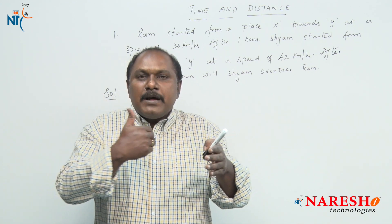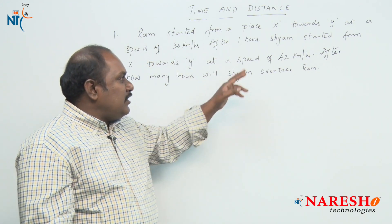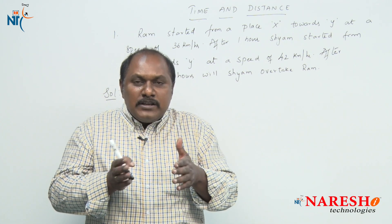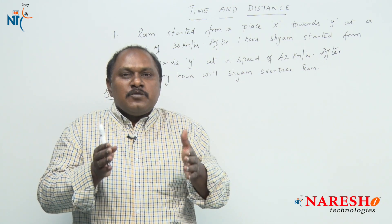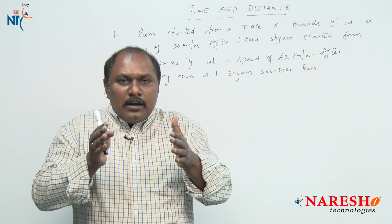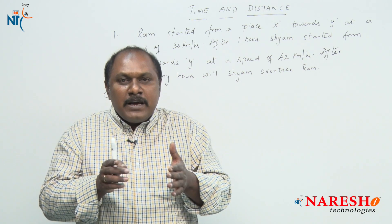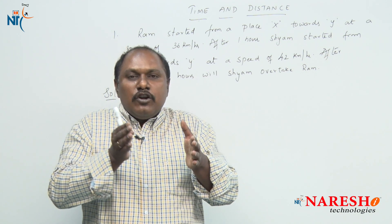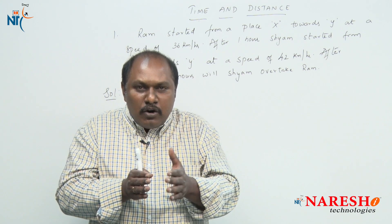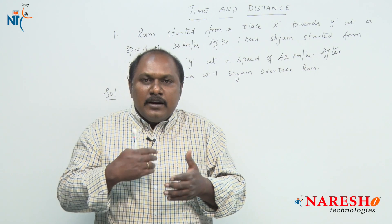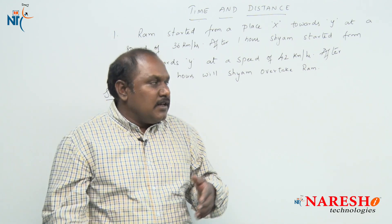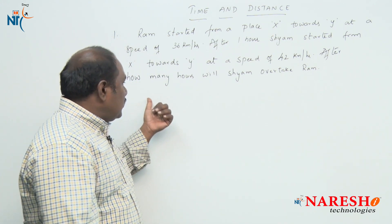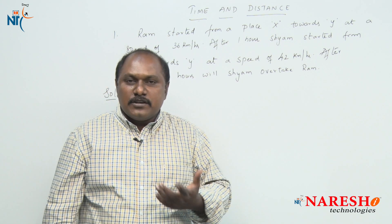As every hour passes by, the distance between Shyam and Ram decreases by 6 km. When Shyam started, the distance was 36 km, and it decreases by 6 km each hour. So 36 km becomes 0 after 6 hours. Therefore, Shyam will overtake Ram after 6 hours. That is the answer for this question.